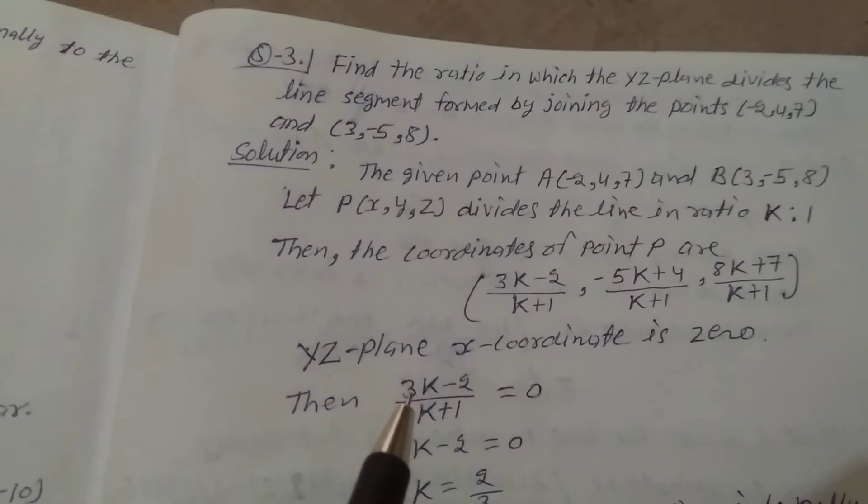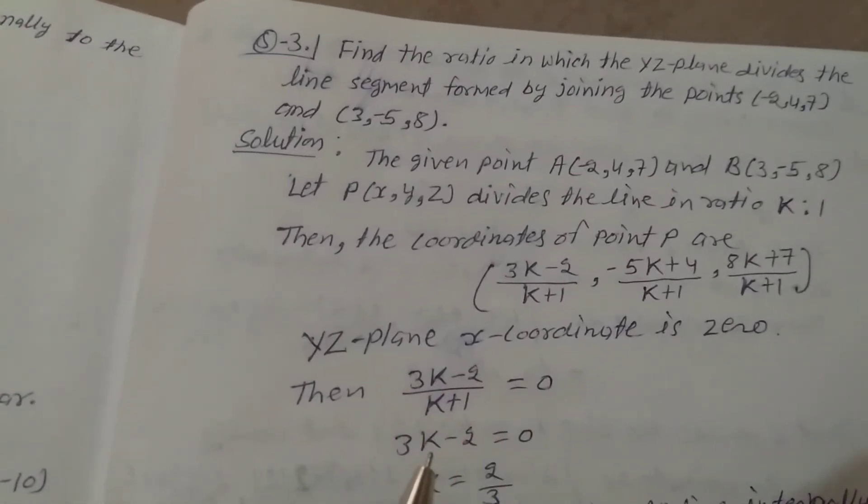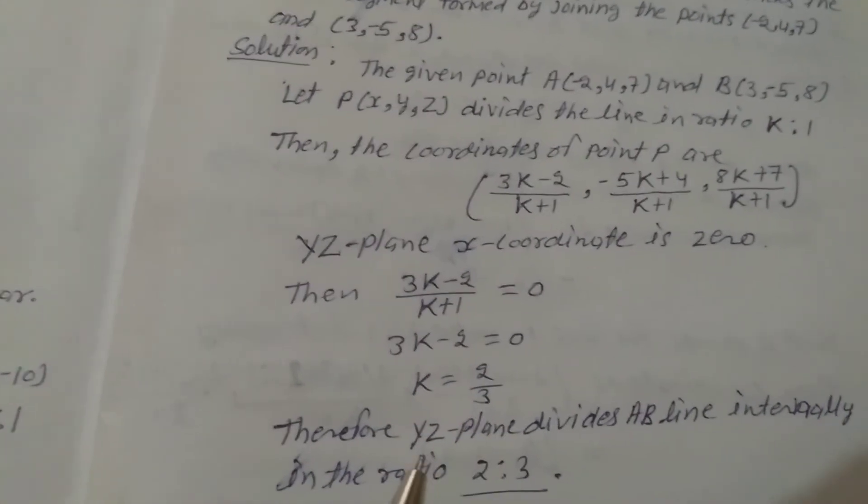then (3K-2)/(K+1) = 0. So 3K-2 = 0, which gives K = 2/3. Therefore,